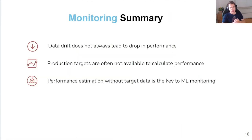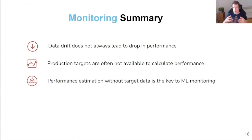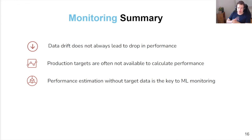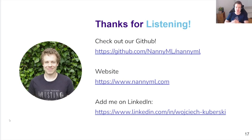To summarize: data drift and concept drift are the main reasons why performance can drop, and data drift does not always lead to performance degradation. We'd like to monitor performance directly, since monitoring data drift alone is insufficient. But production targets are often not available, so we cannot simply calculate performance. Instead, we use confidence-based performance estimation without target data. Only then should we go back to data drift detection to figure out what actually happened if performance drops. Thanks for listening. Feel free to check our GitHub — we're open source, and if you like what you see, do give us a star. Visit our website, and if you have any specific questions, ask them in the Q&A session or add me on LinkedIn.